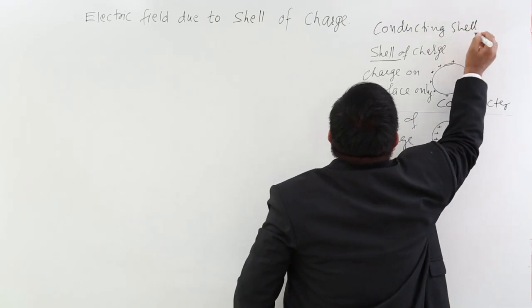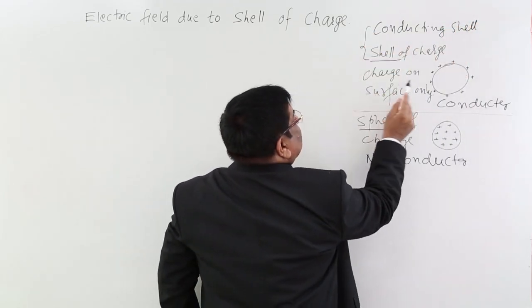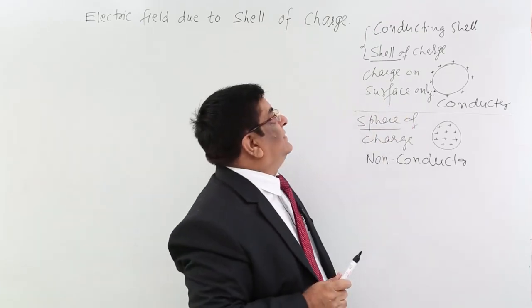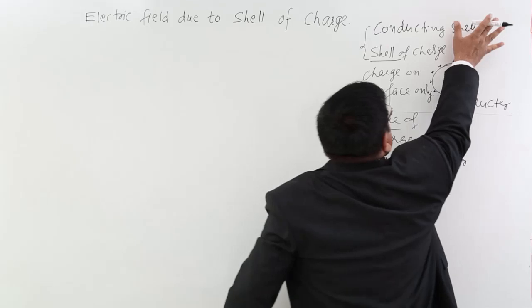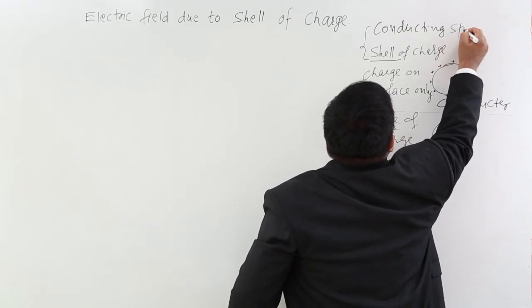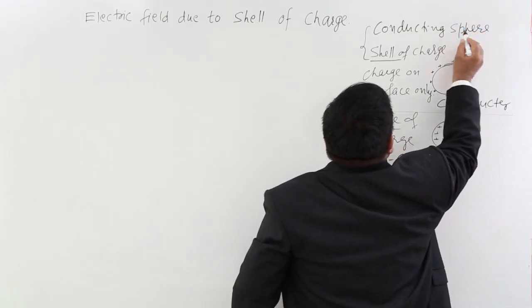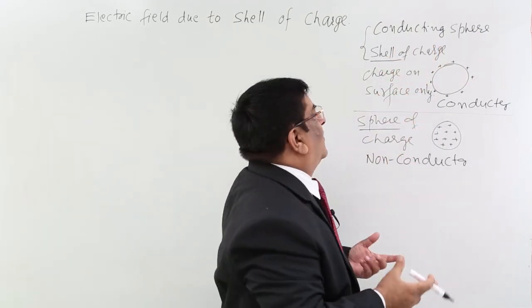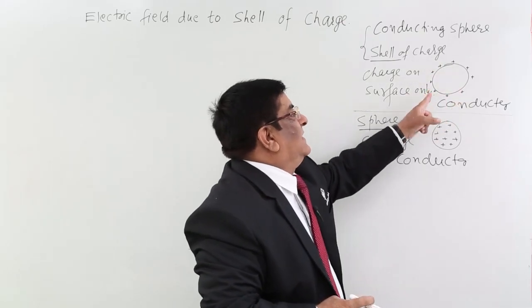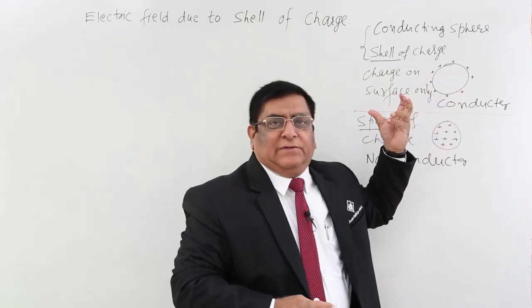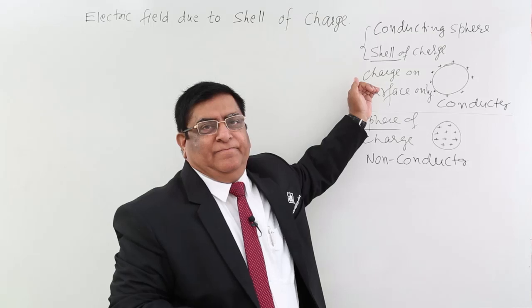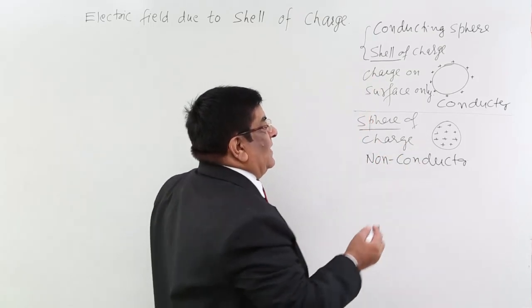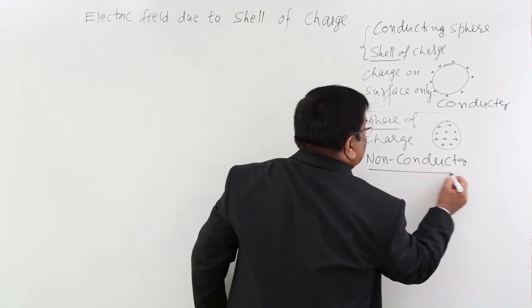In both cases what is common? The common thing is that charge remains on the surface. So don't get confused whether it is a shell or sphere — it may be a sphere but a conducting sphere, or it may be only a shell. For both, the charge will remain on the surface, so our calculation will be the same. The other type of charge distribution in a sphere is when our sphere is a non-conductor.